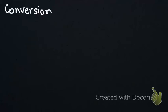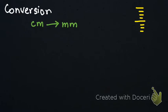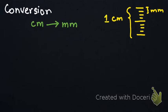Assalamualaikum. In this video we are going to do the conversion of centimeter into millimeter and millimeter into centimeter. The scales that all of you use in your school and daily lives have small lines on them. The smaller lines represent millimeters and the bigger lines represent centimeters. We know that 10 millimeters are equal to 1 centimeter.